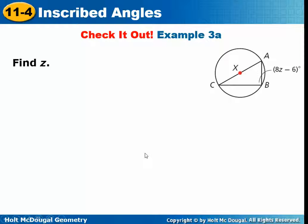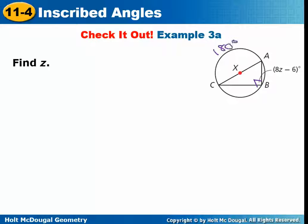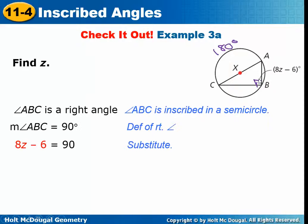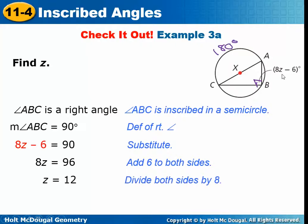It's really just a special case of the inscribed angle theorem. If a line goes through the center, it's a diameter, the arc is 180, and the inscribed angle is 90 degrees. Once you know the angle is 90 degrees, you substitute your expression — 8Z minus 6 — equal to 90 and solve for Z.